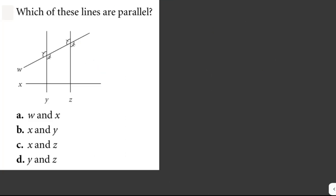Which of these lines are parallel? We're given a figure with four lines: W, X, Y, and Z. In geometry, parallel lines are coplanar, infinite straight lines that do not intersect at any point. In this figure, only lines Y and Z are parallel. The answer is letter D. Also, parallel lines have the same slopes.